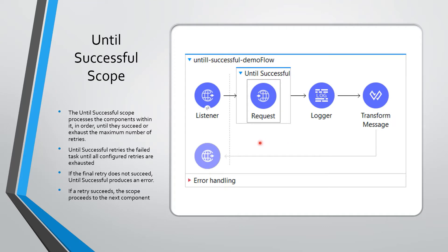In a Mule flow, if we need to use an external resource and connectivity to this resource is not guaranteed — for example, if we need to write a file to an FTP server, or if we need to invoke an external web service and availability of that service has issues — to handle these scenarios we need to use the Until Successful scope.